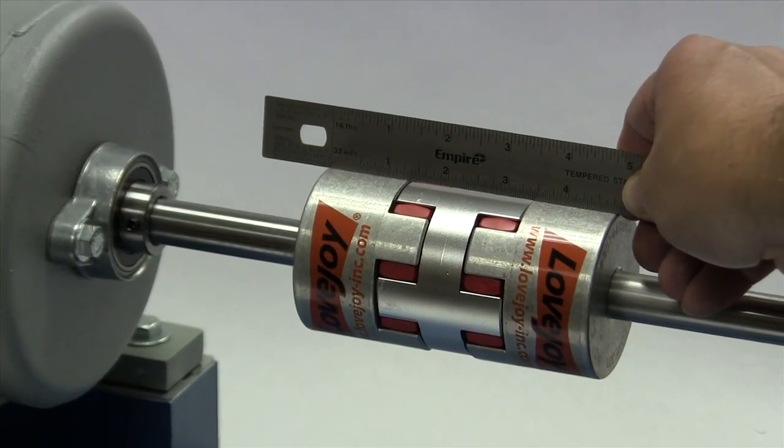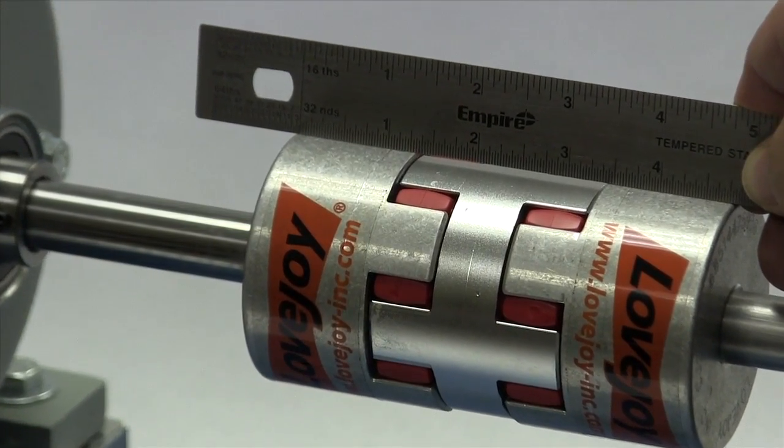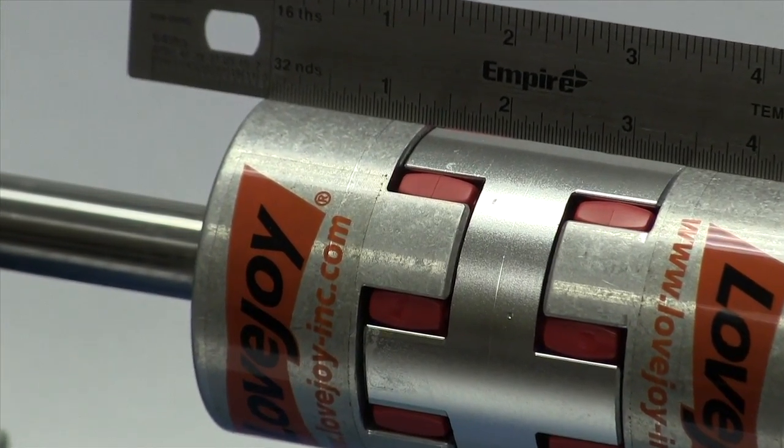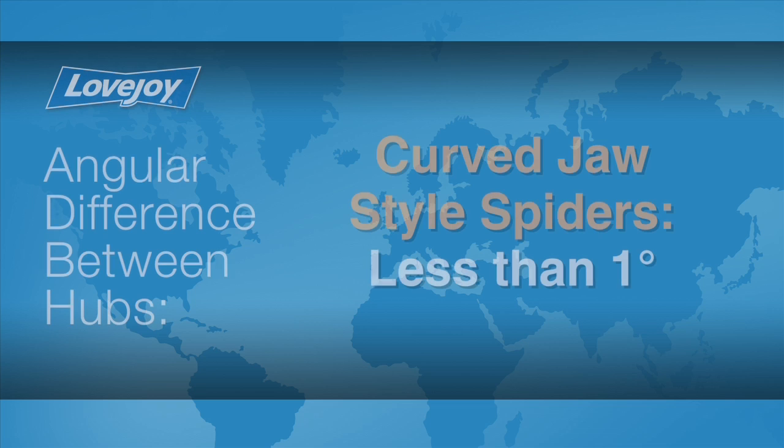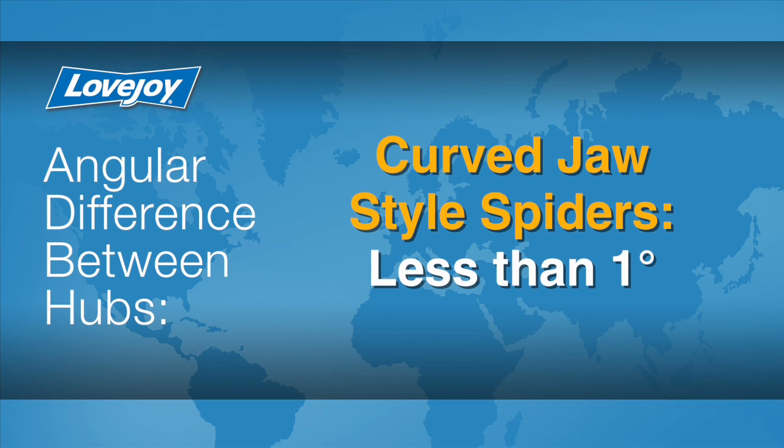The offset between the two hubs must be less than 1/32nd of an inch to prevent damage to the coupling. The angular difference between the two hubs should be less than 1 degree for curved jaw style spiders. If the alignment exceeds the allowable amount, realign the equipment to correct this condition.